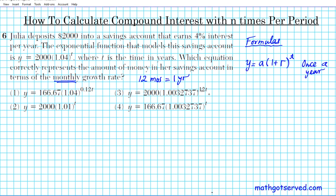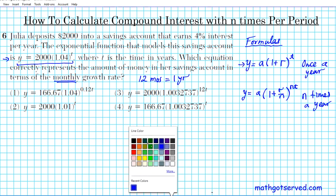So in this particular situation, we're going to be using the formula y equals a times 1 plus the interest rate over n raised to the n t. This is for a situation where it's compounded n times a year per period.